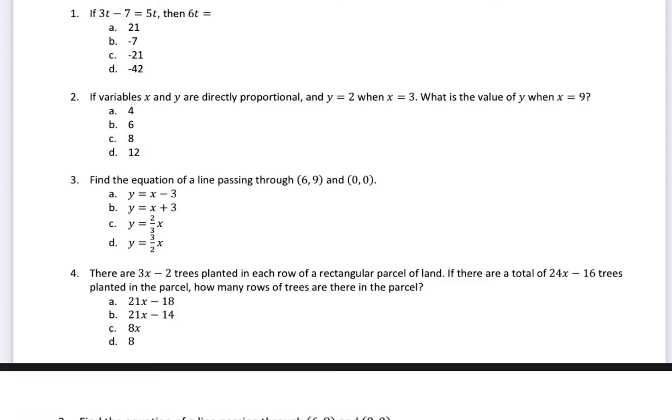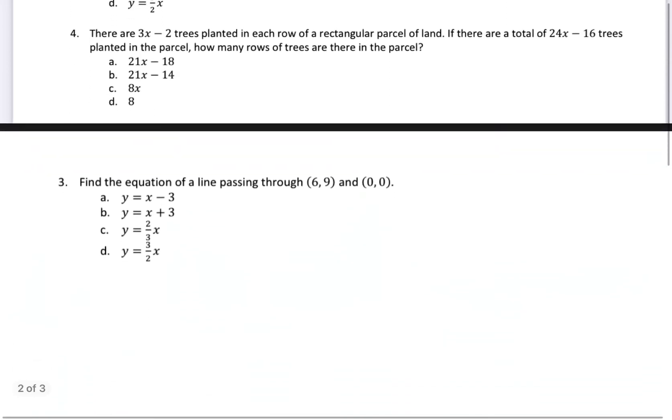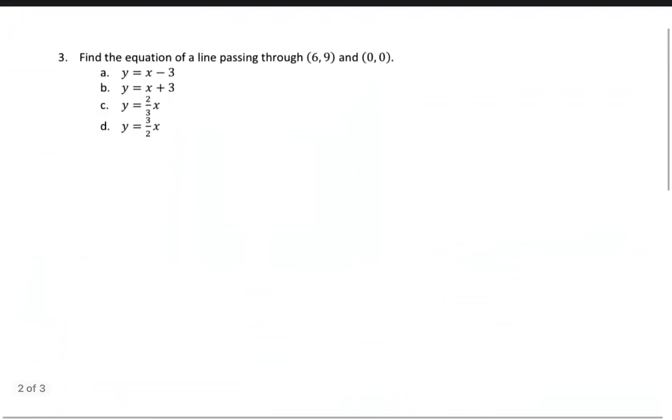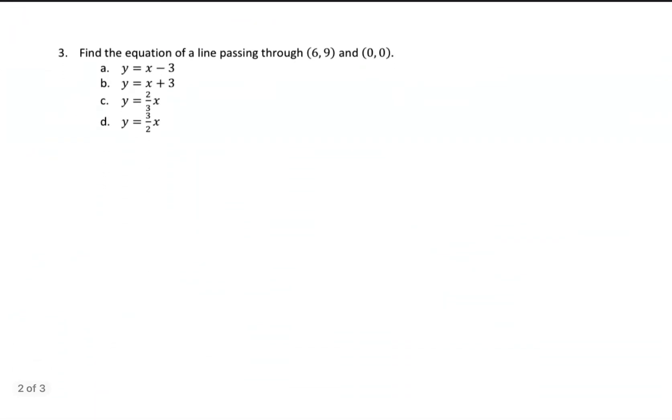So question number 3, find the equation of a line passing through these two points. So let me bring up question number 3, where it could be just by itself. Alright, so it says find an equation of a line that passes through these two points. So I have to bring in some outside knowledge of what an equation of a line looks like.